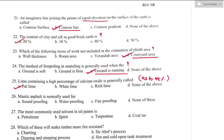Question number twenty-six: mastic asphalt is normally used for? Mastic asphalt is a mixture of bitumen, fine aggregate, and filler that yields a voidless and impermeable mass. It is very durable, completely impervious, and has self-healing capacity with bleeding. Mastic asphalt is normally used for waterproofing. Option B is the right answer.